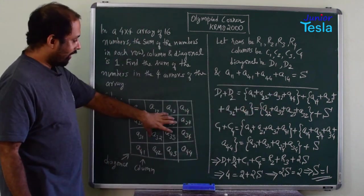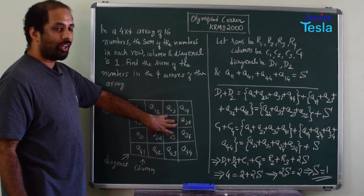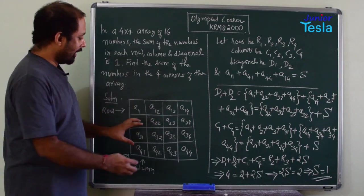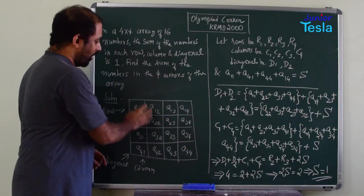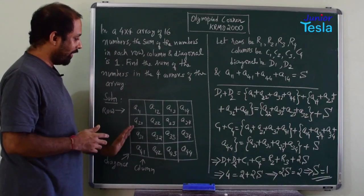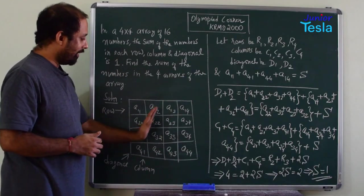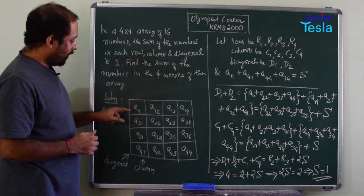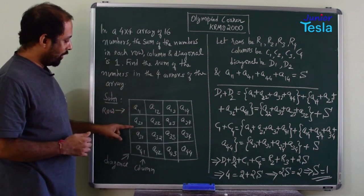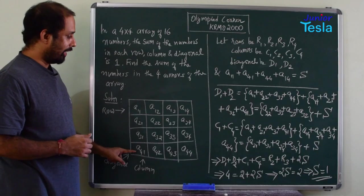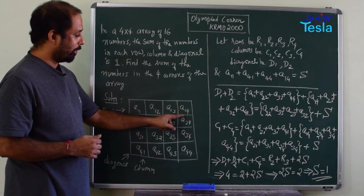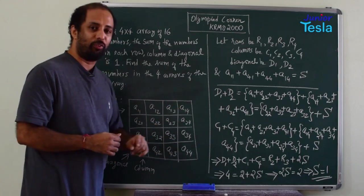Now I already have these four entries. What I can do is I can take these two columns c1 and c4. What is c1 and c4? c1 is a11 plus a21 plus a31 plus a41. Similarly, c4 is a14 plus a24 plus a34 plus a44.